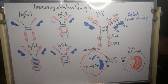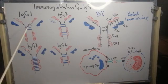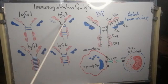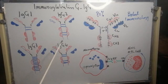There are four IgG subclasses: IgG1, IgG2, IgG3, and IgG4.